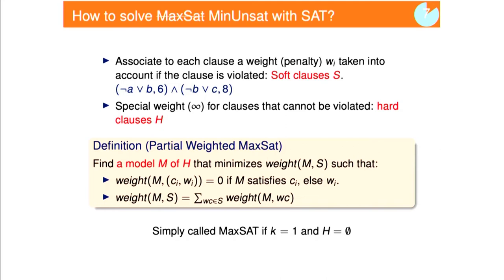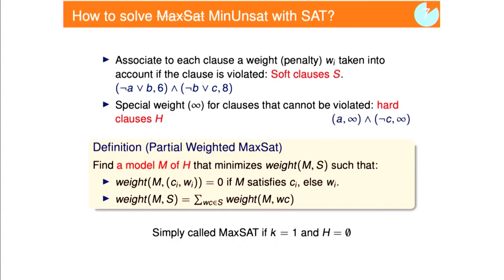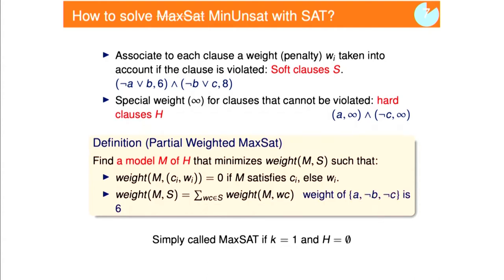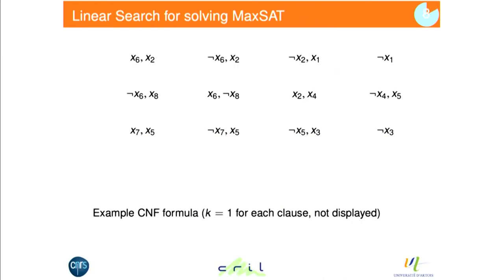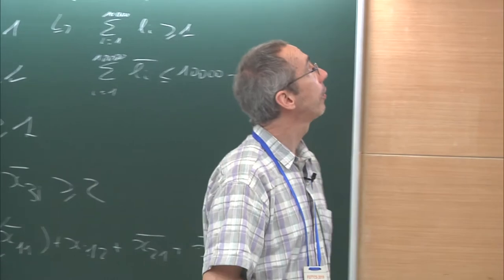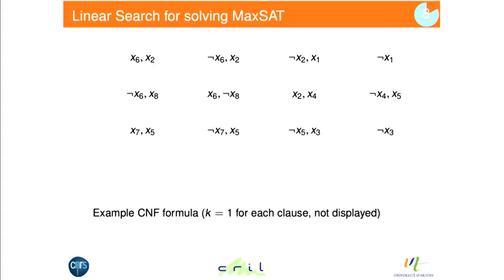Here is an example. You have NOT A OR B with weight 6, and NOT B OR C with weight 8 — those are soft clauses. The hard clauses are A and NOT C. For the assignment A, NOT B, NOT C, the weight is 6, because we are violating the first clause (weight 6), which is less than violating the second one (weight 8).